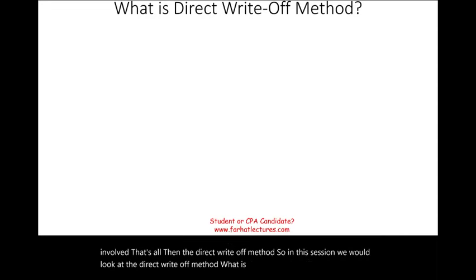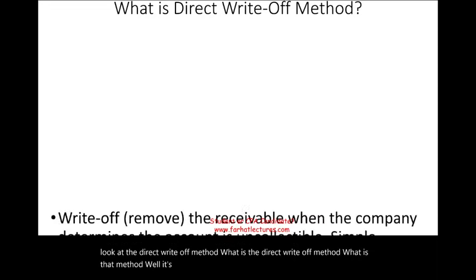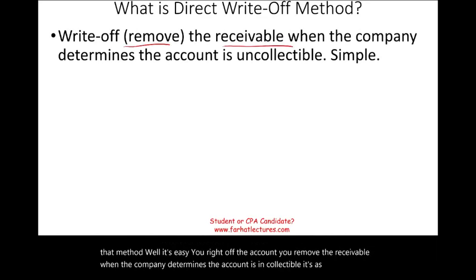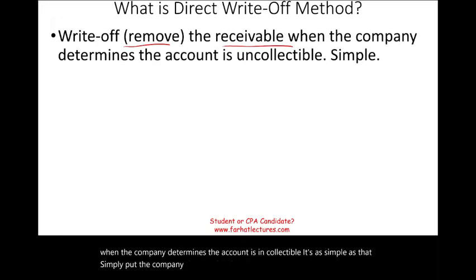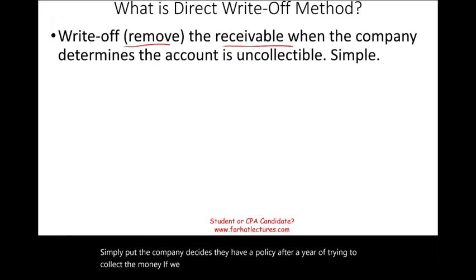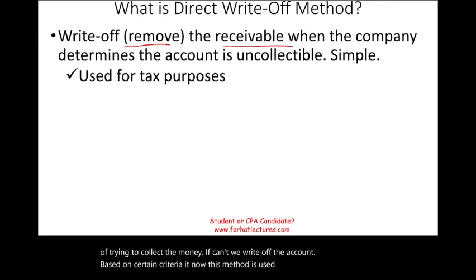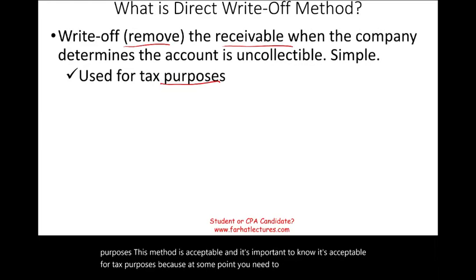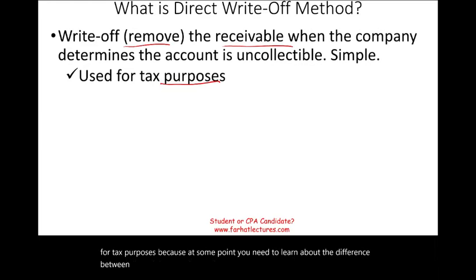What is the direct write-off method? It's straightforward: you write off the account — you remove the receivable — when the company determines the account is uncollectible. The company decides based on a policy; for example, after a year of trying to collect the money, if they can't, they write off the account. This method is used for tax purposes and is acceptable for tax purposes. It's important to know this because it highlights a difference between financial accounting and tax accounting.